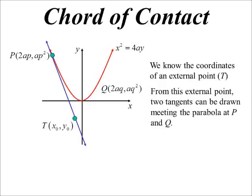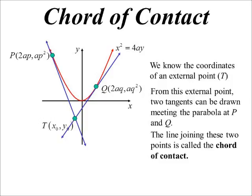So one tangent would meet at a point, let's give it a parametric, 2AP AP squared. The other tangent will meet at the point, 2AQ AQ squared. Now, the chord of contact is the chord that joins those two points of contact, hence the name. So PQ.